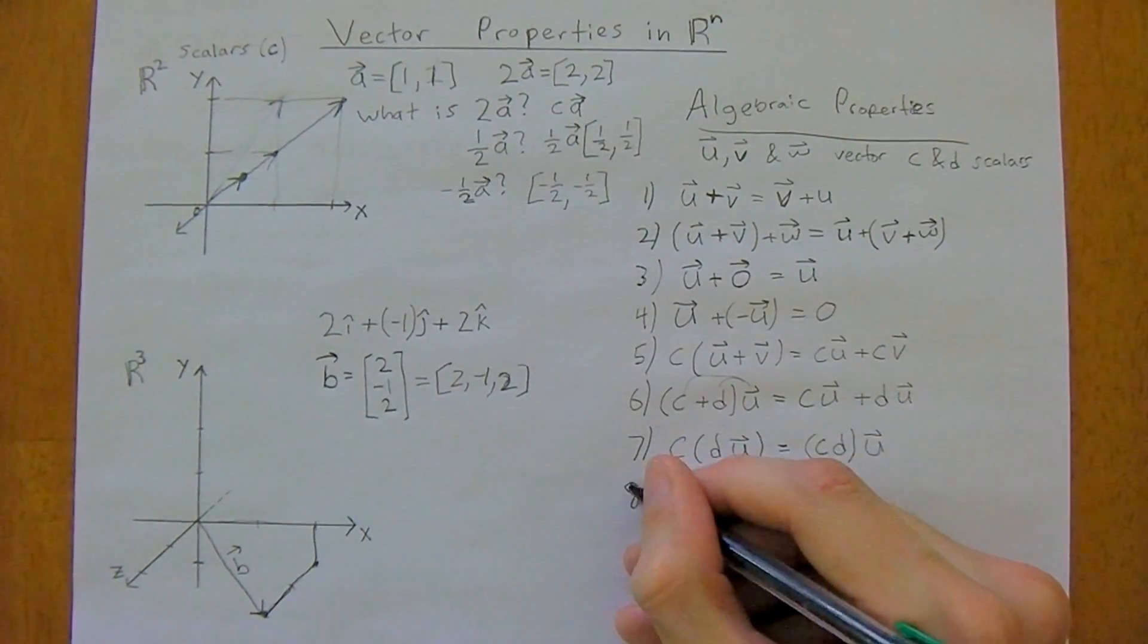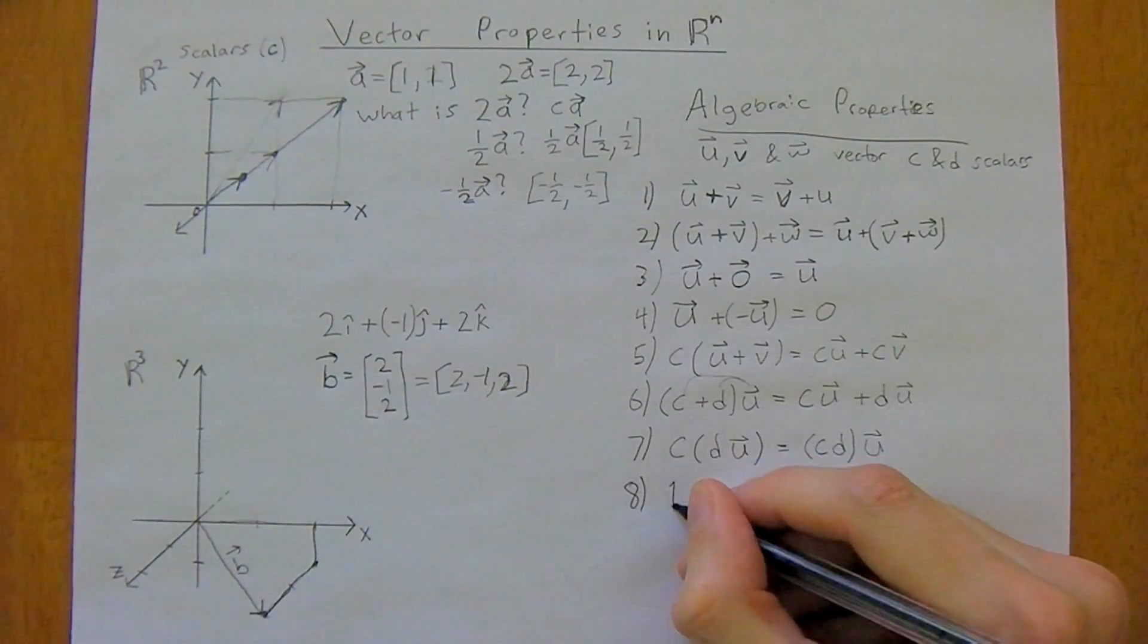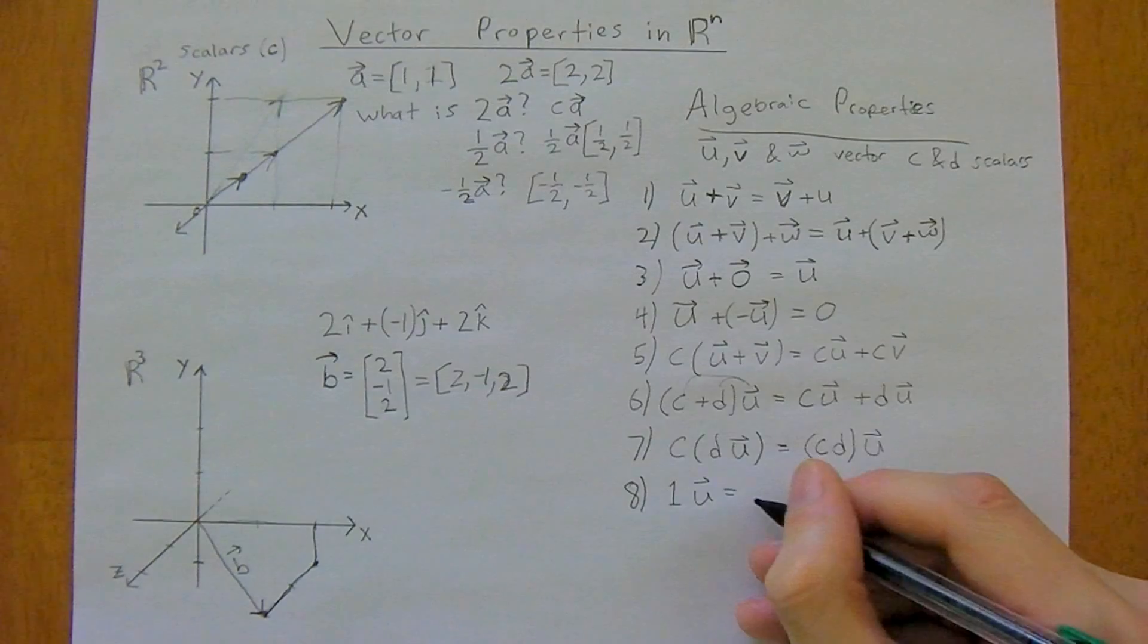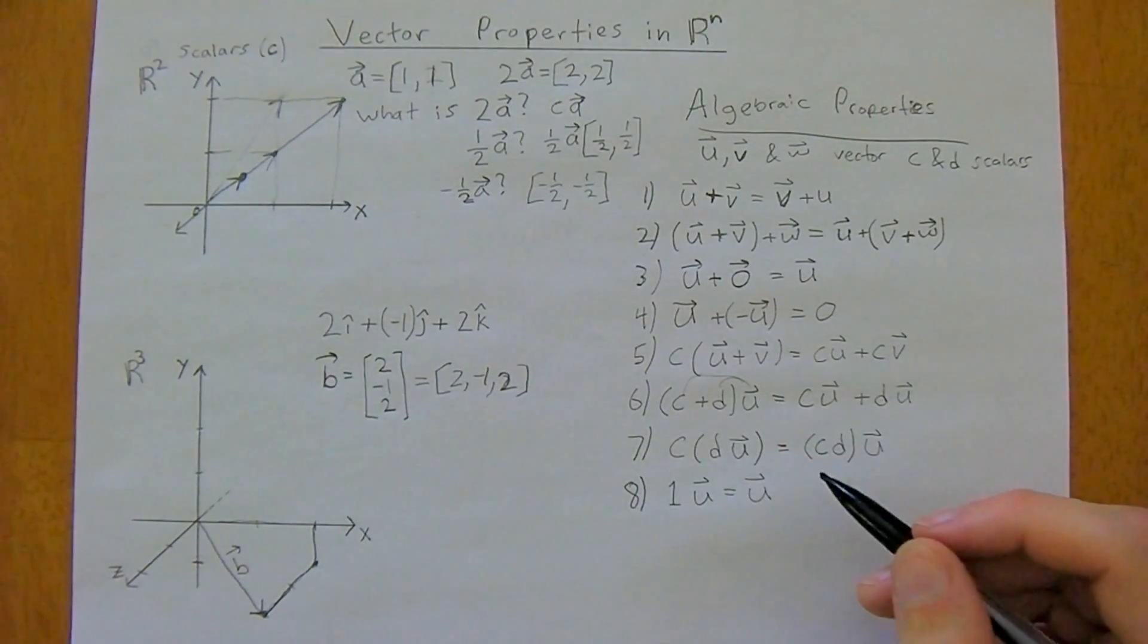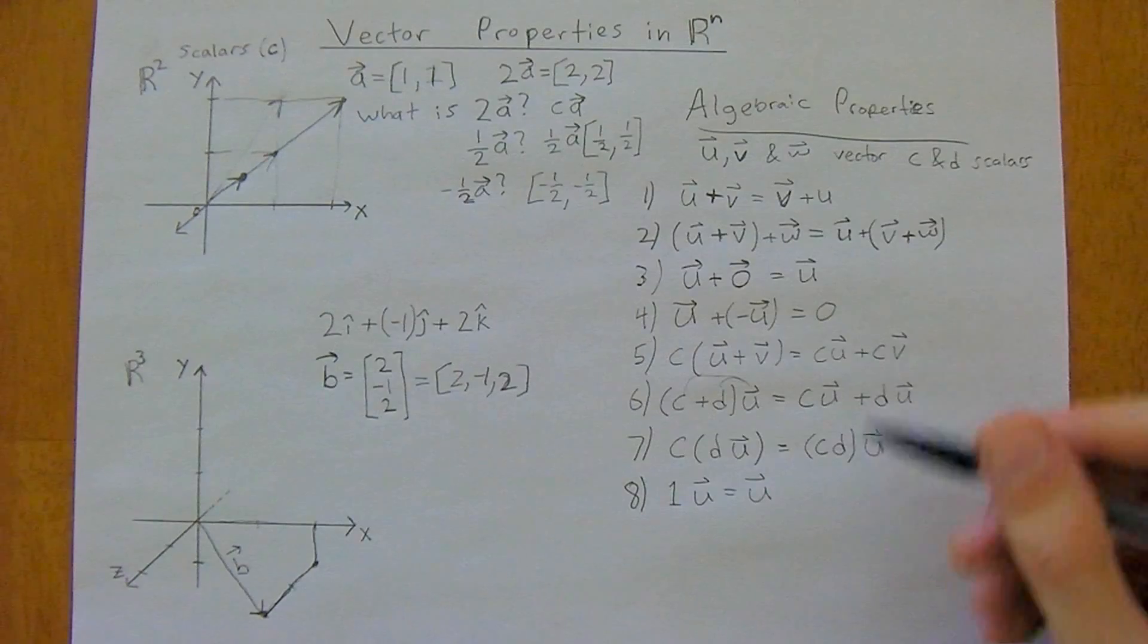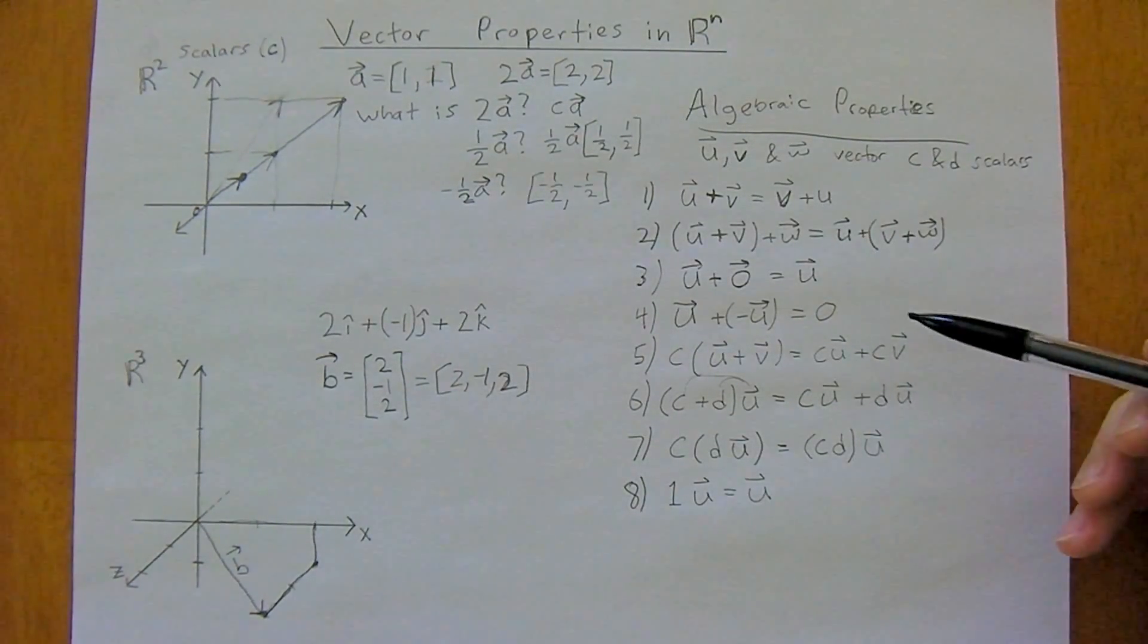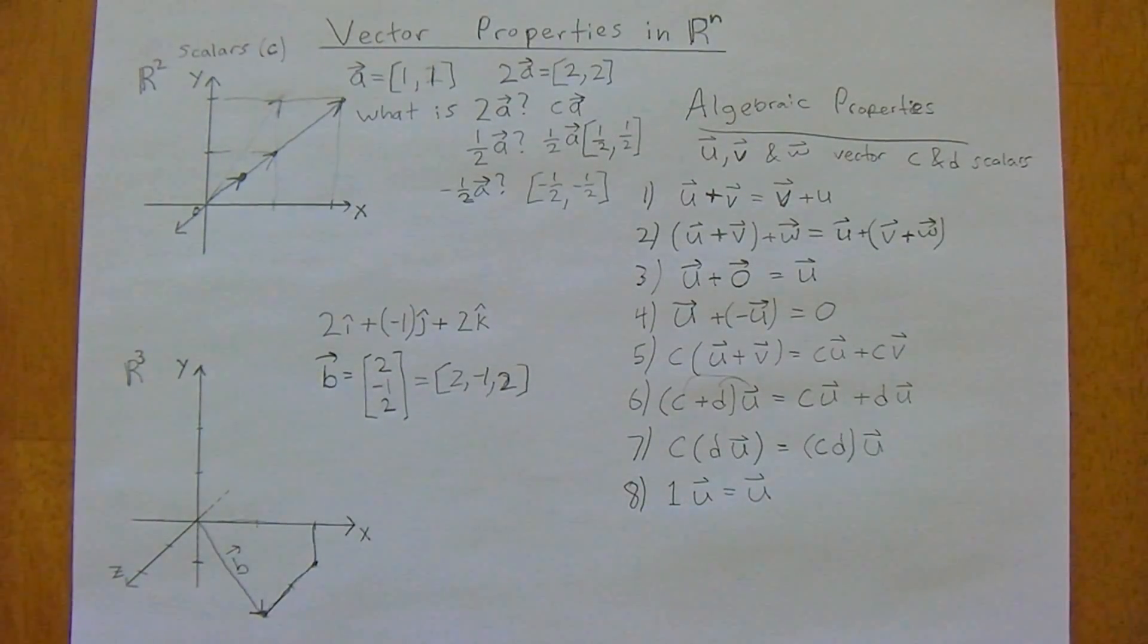And the last one, which is also very important, is that one times vector u, now it's just equal to vector u. So these are just some properties, and it's important to get used to them, because this will really help you as you start doing algebra and going deeper into vectors. Okay, thank you, have an excellent day.